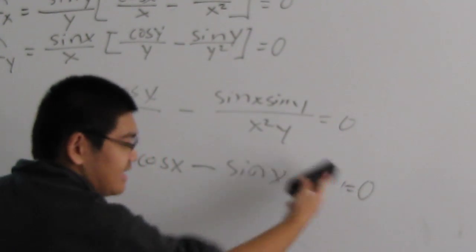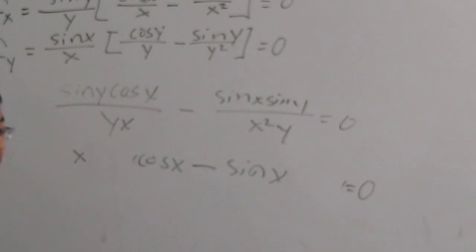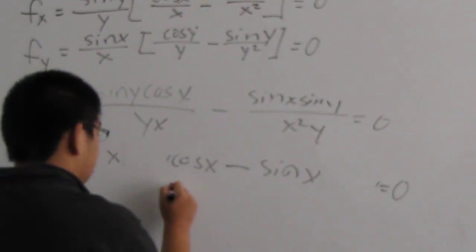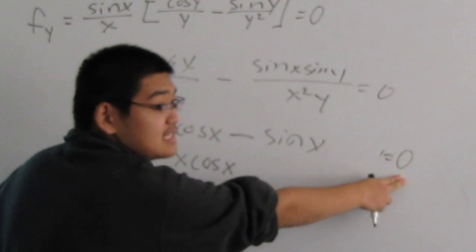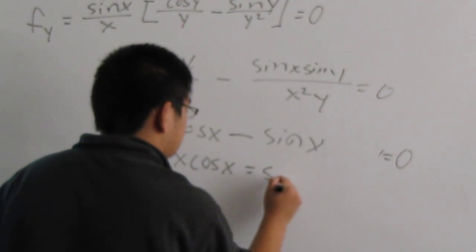It's the same as dividing that and everything cancels out. Now, what you do is you see x cosine of x. You move that to the other side. It's equal to sine of x.